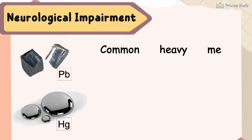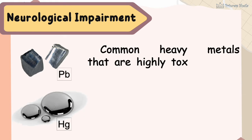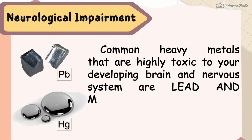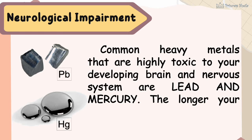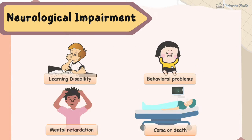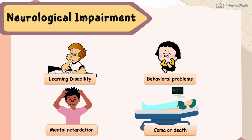Neurological impairment: common heavy metals that are highly toxic to your developing brain and nervous system are lead and mercury. The longer your exposure, the greater the likelihood of damage. Poisoning from these metals can lead to learning disabilities, behavioral problems, mental retardation, or worse, coma and death.